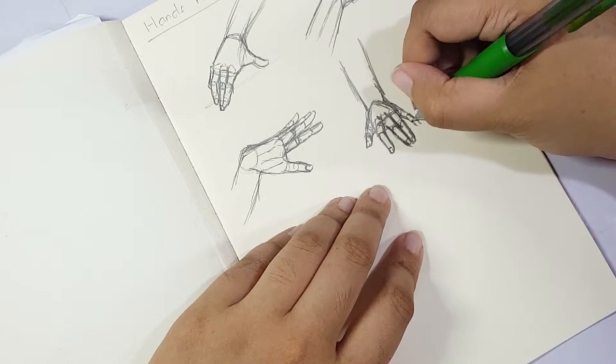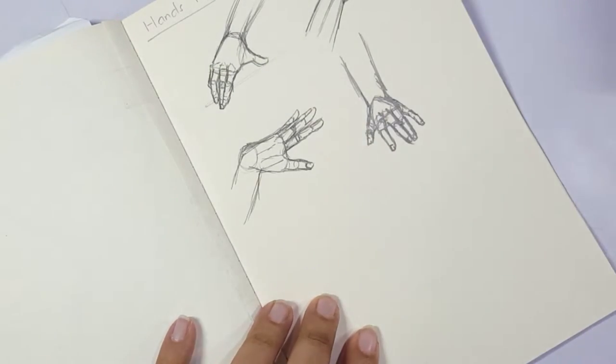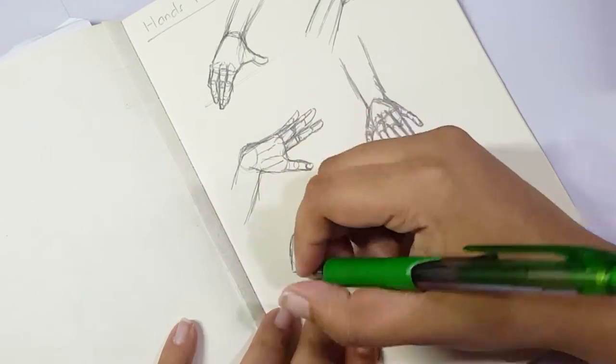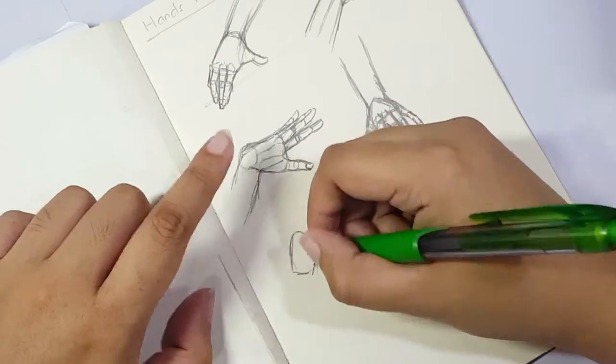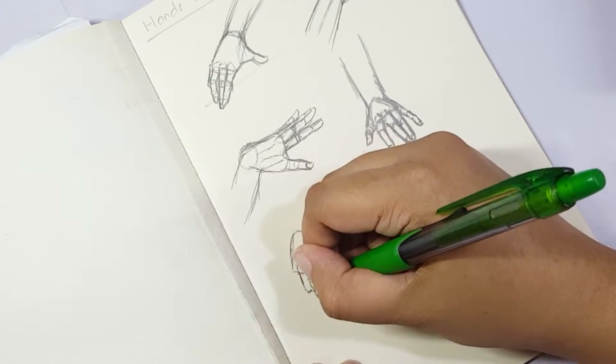When you were younger, you would drop drawings where the hands are behind their back or in my case, I would cut them out of the frame of the photo of the picture itself. So their hands actually cut off near their wrists because I didn't want to draw the hands.